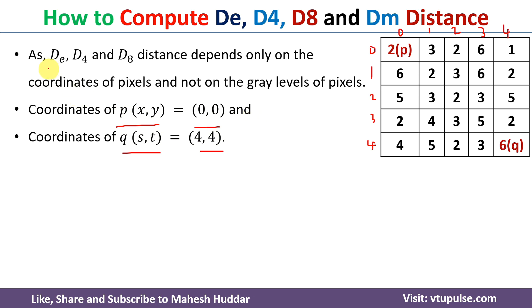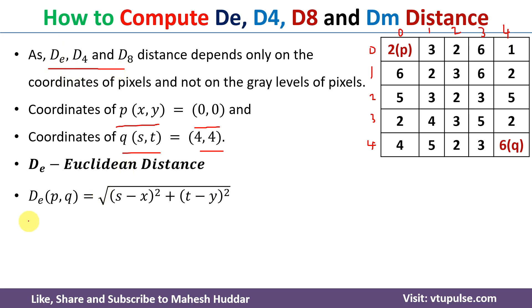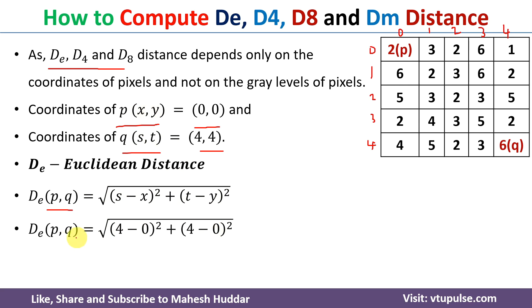To calculate the Euclidean distance, we use the formula: DE between p and q equals the square root of (s−x)² + (t−y)². Putting the values s=4, x=0, t=4, y=0 into the equation and solving, the Euclidean distance between p and q is approximately 5.65 units.